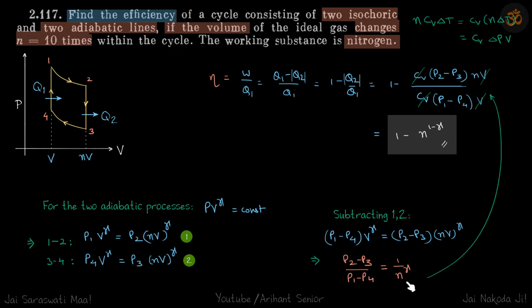We'll put that ratio here and get our answer. So this is the efficiency of this cycle: 1 minus 1 over n^gamma.